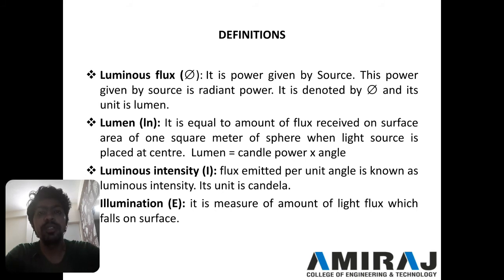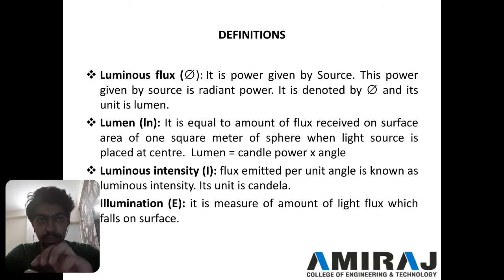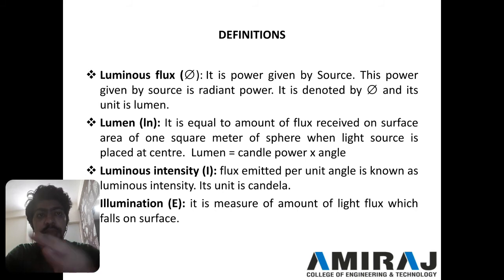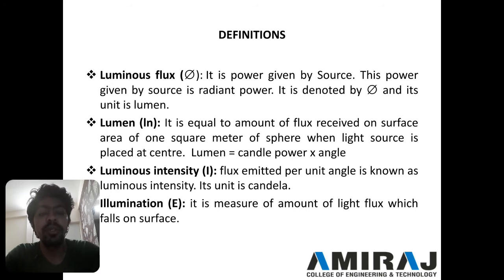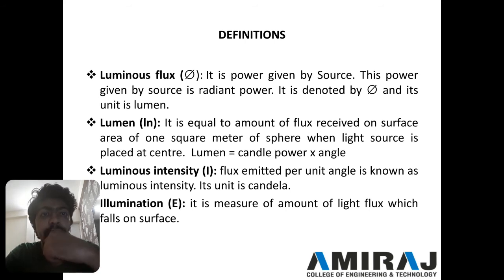Lumen is equal to the amount of flux received on a particular surface area of one square meter. When the light source is placed at the center, the flux received on a surface of one square meter of a sphere is known as one lumen. Next, luminous intensity is the flux emitted per unit angle. If flux is provided per unit angle, it is known as luminous intensity.